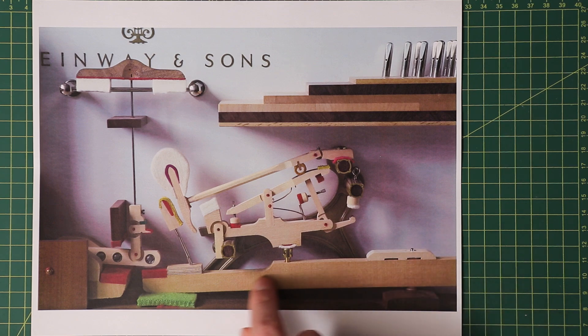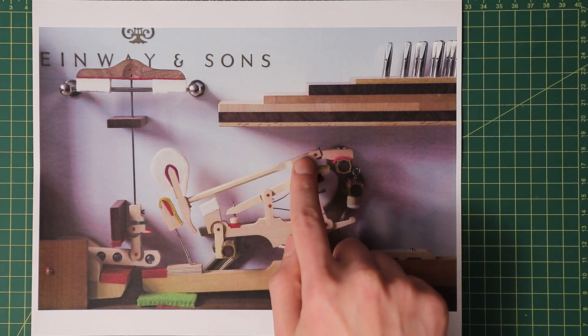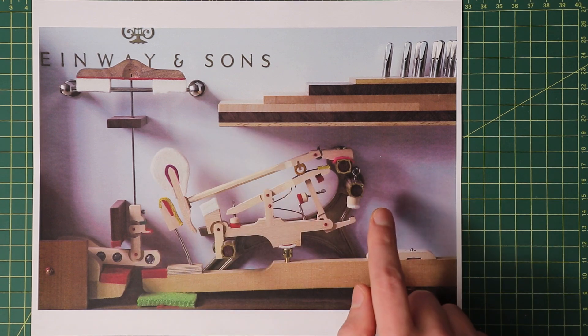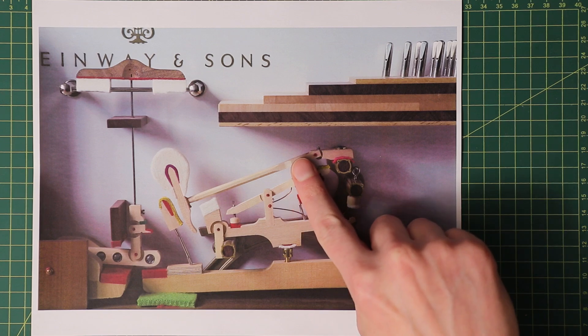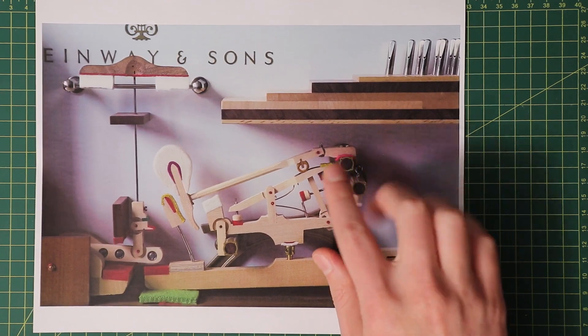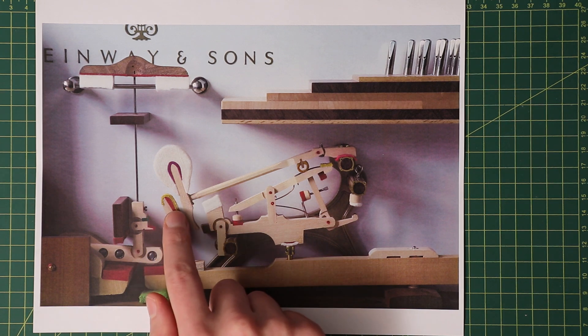Starting from the key, as the player pushes the key down, it forces the weapon to move upwards, which forces the hammer to rise until this little boot-like part hits the let-off button and starts turning, falling off the side of the hammer knuckle and thus no longer pushing at the hammer, allowing it to drop back down and be caught by the back check.